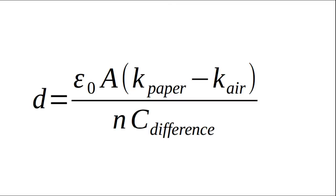When you combine the formulas on the last slide, you get that D, the thickness of a single sheet of paper, is equal to epsilon naught times the area of paper that is in the electric field of the capacitor times the quantity of the relative permeability of paper minus the relative permeability of air, all of that over the number of sheets of paper times the change in capacitance observed when you insert the paper into the capacitor.